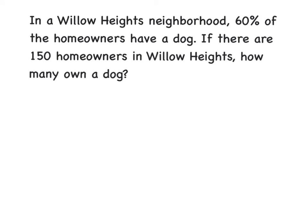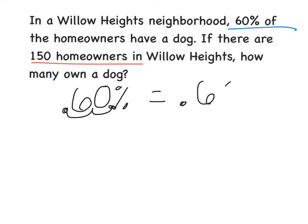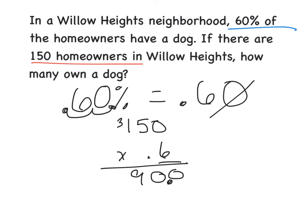Notice this is the same problem as before, because I'm going to show you a second method that may work sometimes when a proportion does not work. We identified that the 150 homeowners was our whole and 60% was our percent. We could also change 60% to a decimal, which is moving our decimal twice, so this would be 0.60 or 0.6. Then you can multiply: 150 times 0.6, which would be 0, 30, and 9. I have one number behind the decimal, so my answer would be 90. This is another way that you can find a part when you're given a percent and a whole. But you can only do this multiplication when you are given a percent and a whole.